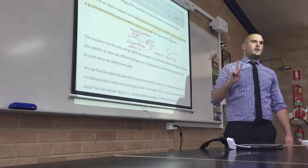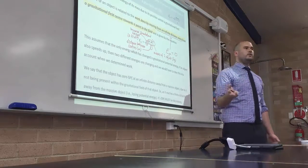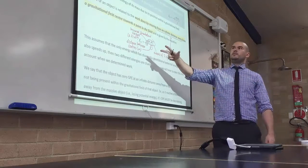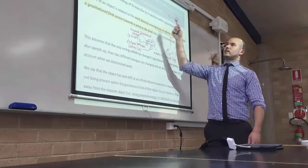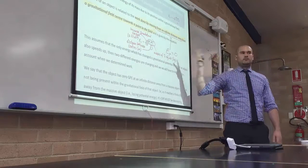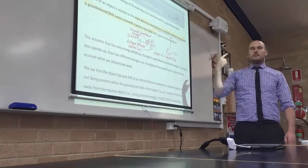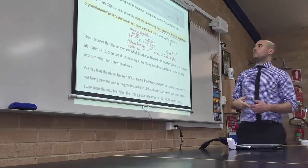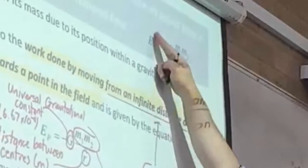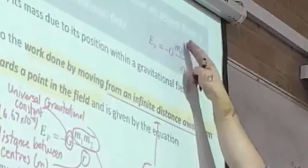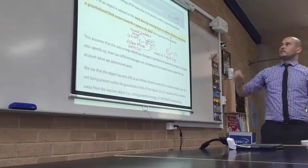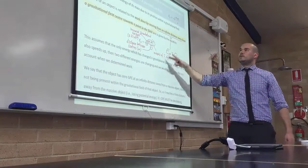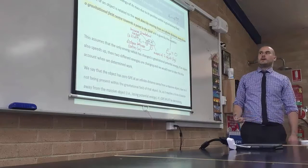This is the equation which we're given in the formula sheet. So for our two mark kind of defined question, that's all we need to do. We need to say a sentence. If you get a question that says define GPE, like what is it, basically you just need to recite that and then give the equation. That's two marks. Perhaps you may also talk about proportionality. So you can see how potential energy depends directly on the products of the masses of the two objects and it depends inversely on their distance of separation.